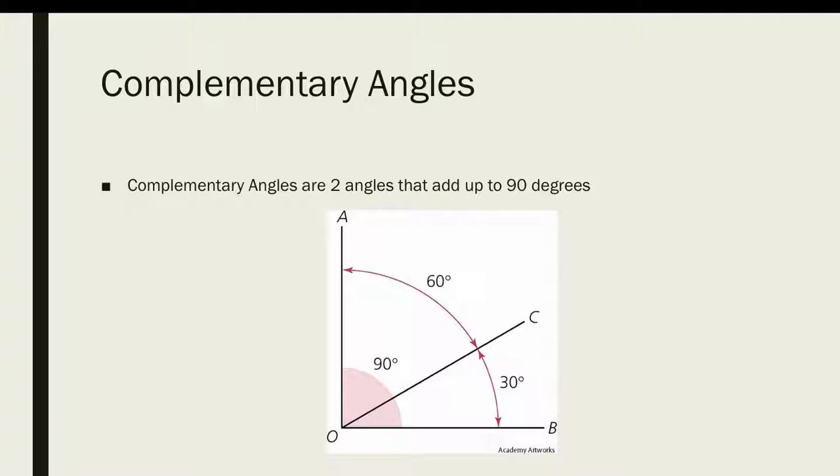Complementary angles. Complementary angles are two angles that add up to 90 degrees. In this case, angle AOC and angle COB are complementary, because AOC is 60, COB is 30, and they add up to 90, which is the right angle, so they are complementary.